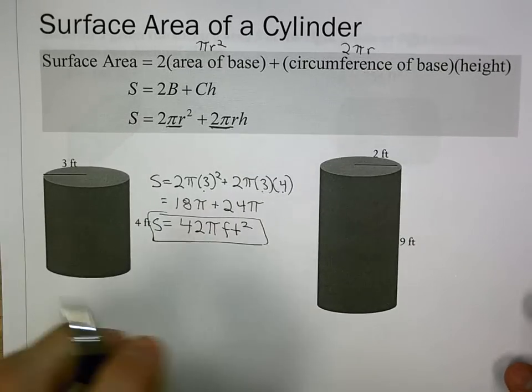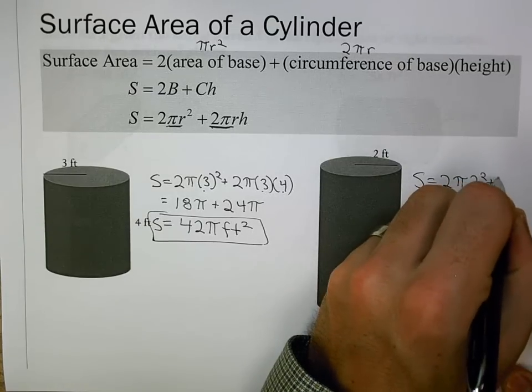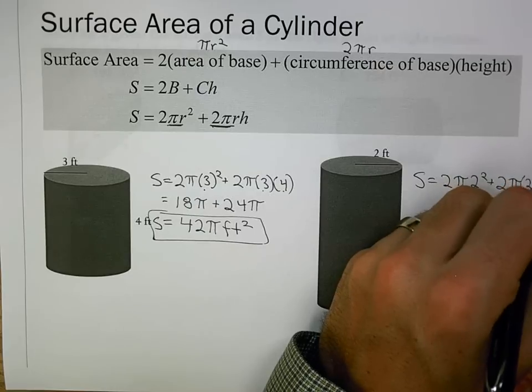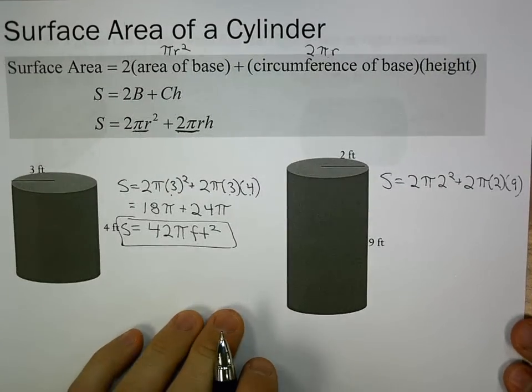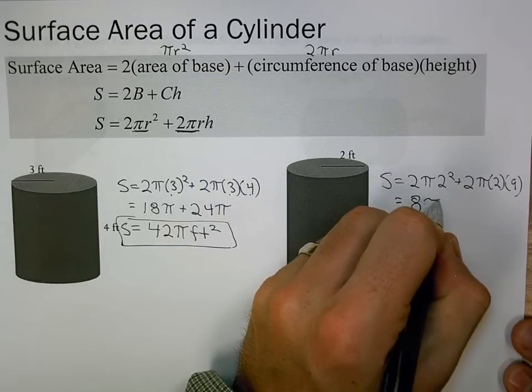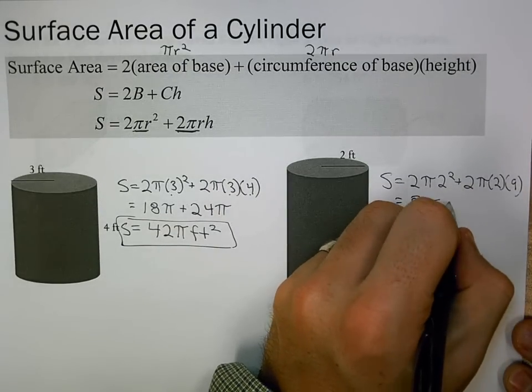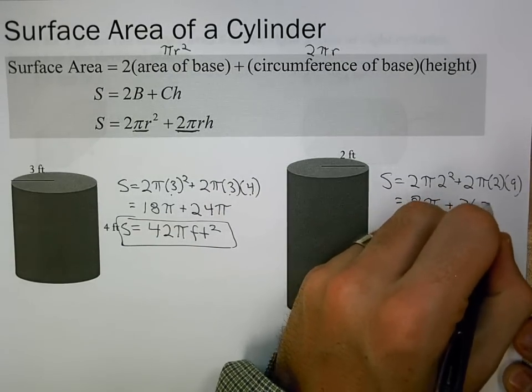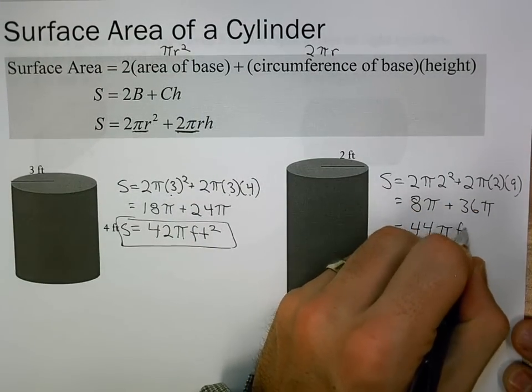For the next one, it's 2π times 2 squared plus 2π times 2 times 9. That's 8π plus 36π, which equals 44π feet squared.